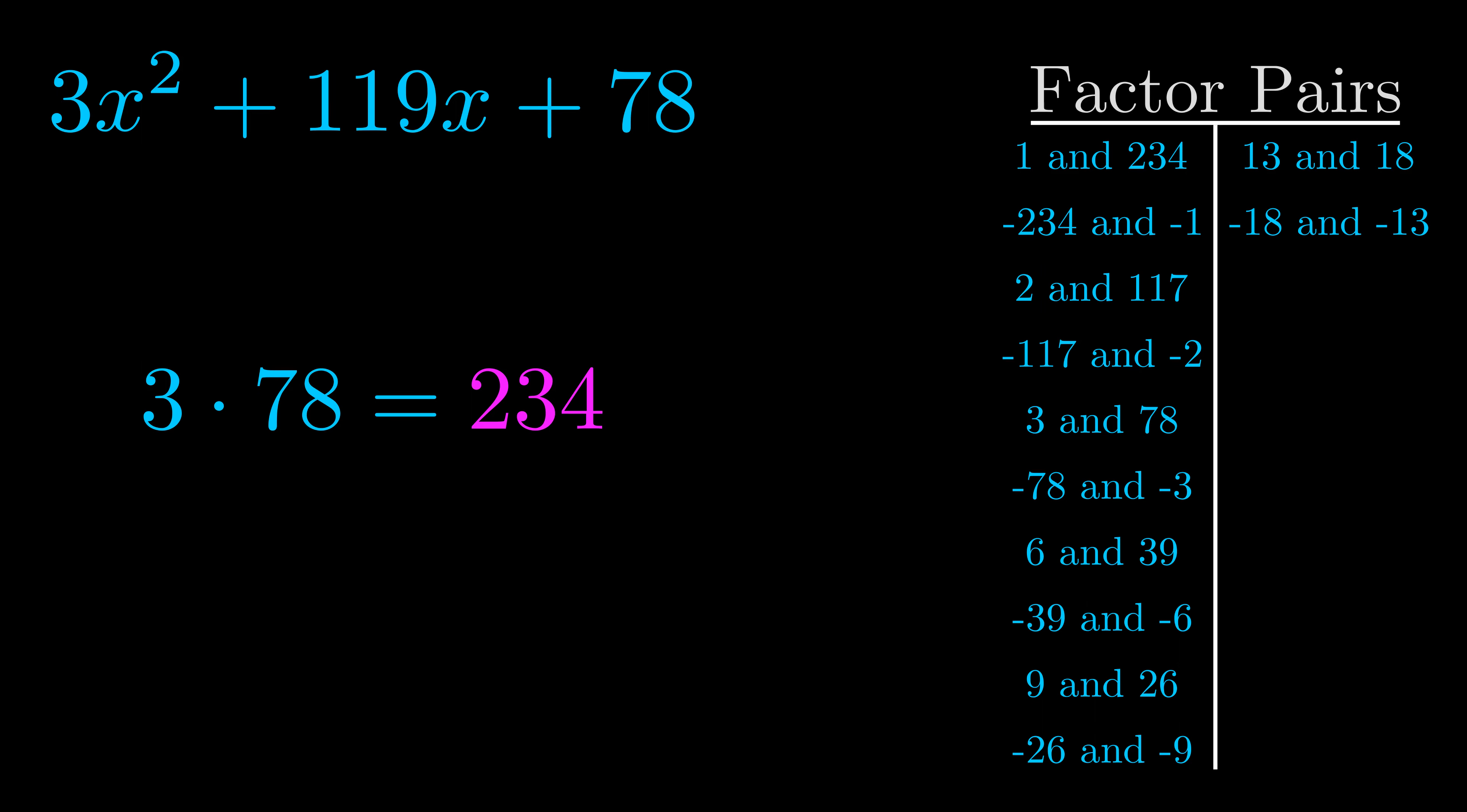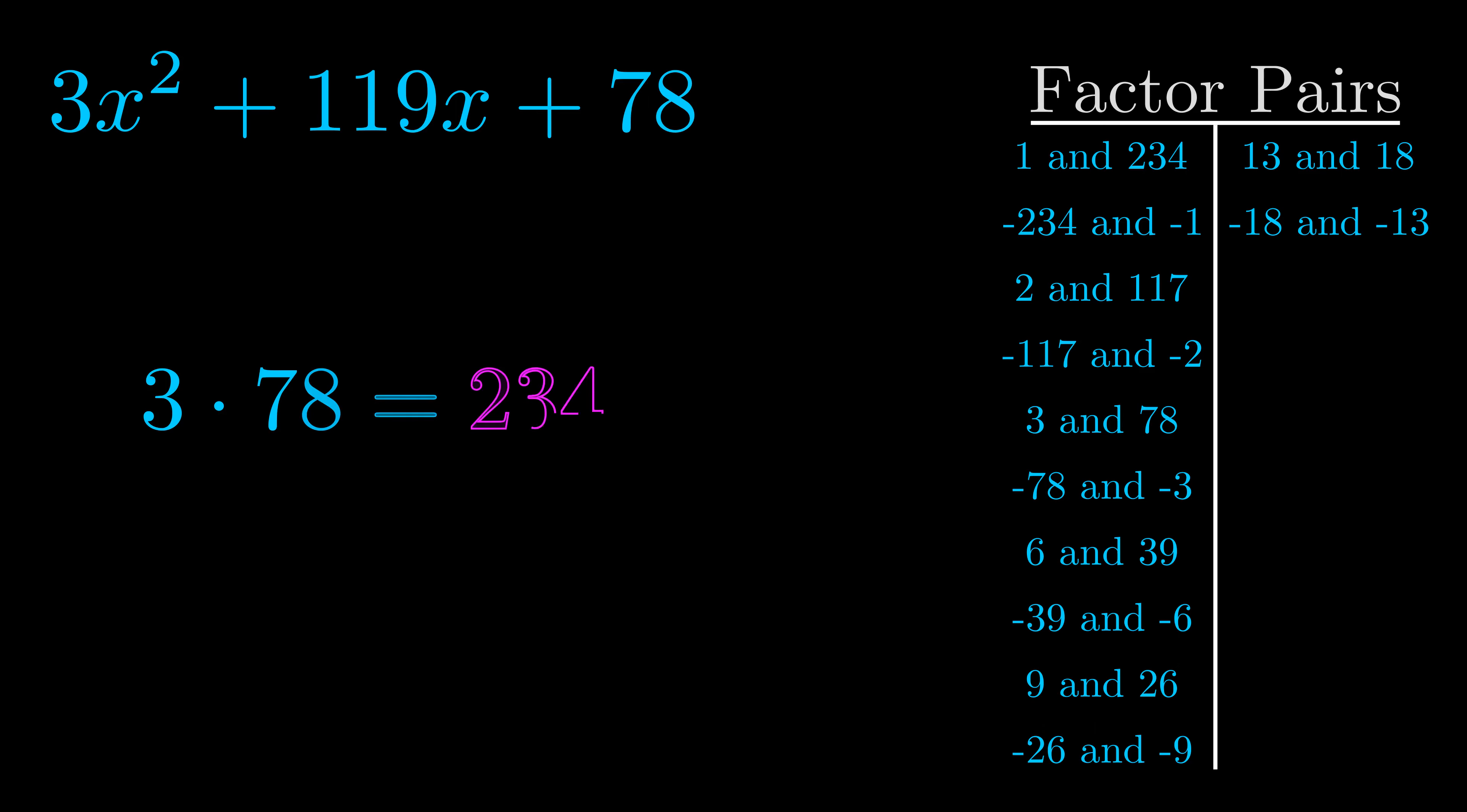Now once you have these factor pairs the goal is to find which of these pairs adds to the b value. The b value is the coefficient on the x term. That's the middle term, the one that we haven't done anything with yet. And really this is the only factor pair that we need.